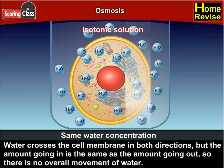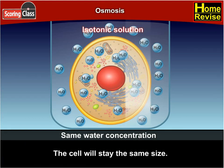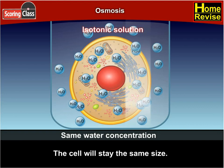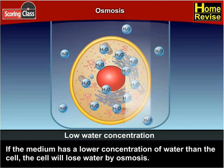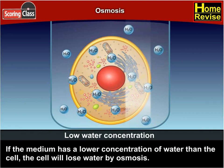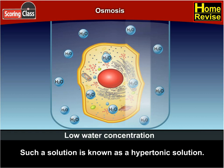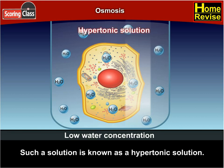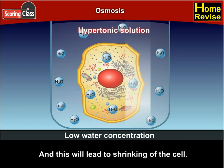The cell will stay the same size. There is a third possibility: if the medium has a lower concentration of water than the cell, the cell will lose water by osmosis. Such a solution is known as a hypertonic solution, and this will lead to shrinking of the cell. Now let us try this out by the following activity.